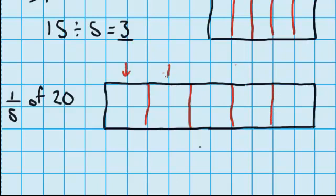One way I can do that is to do it by drawing some lines in. You can see I have got a fifth here, 2 fifths, 3 fifths, 4 fifths and 5 fifths. And I can see that in each of those fifths there are 4 blocks. So 1 fifth of 20 equals 4.